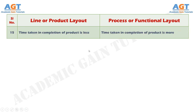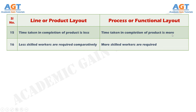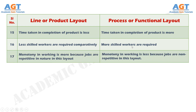Number 15: In product layout, time taken in completion of product is less, whereas time taken in completion of product is more in process layout. Number 16: In product layout, monotony in working is more because jobs are repetitive in nature, whereas in process layout, monotony in working is less because jobs are non-repetitive.